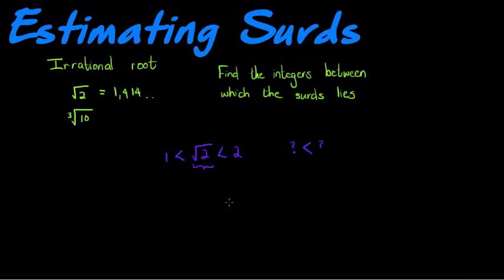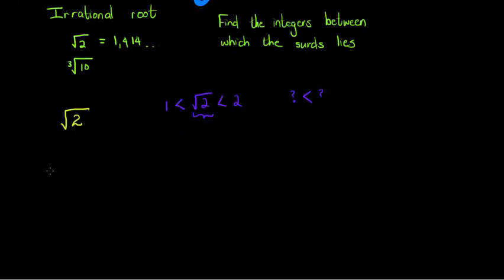In order to understand what we are doing, we need to understand once again what a root means. If I take the square root of a number — say the number 2 — basically what that means is: I want to know what value, let's call it x, must be squared to give me the number 2. I want to find the number I have to square to get 2 — that is the square root of 2. Similarly, for a cube root of 10: what value must I cube to get an answer of 10?